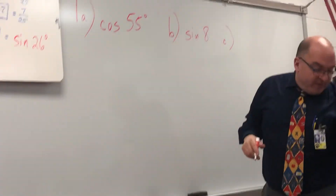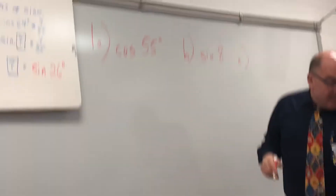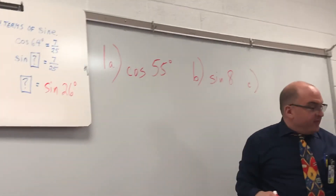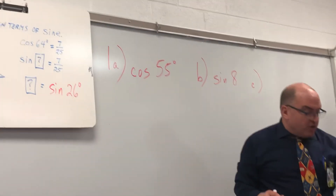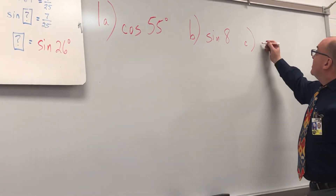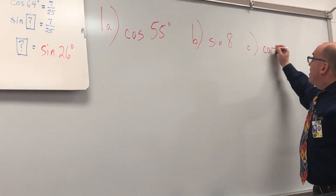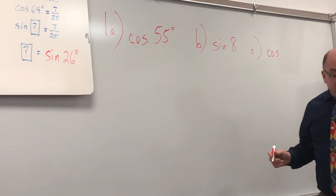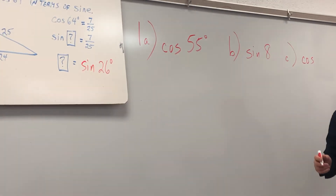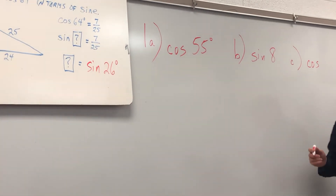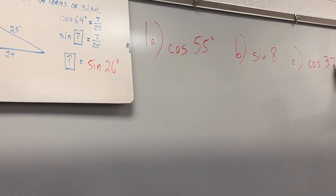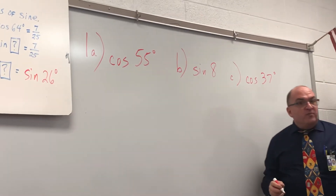It says write sine 53 in terms of cosine, which means it's going to be cosine what? Sine 53 is cosine what? 37. That's all you have to do.